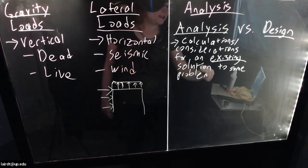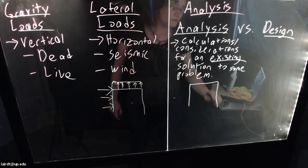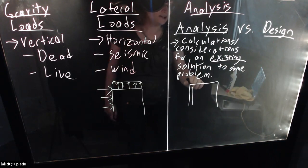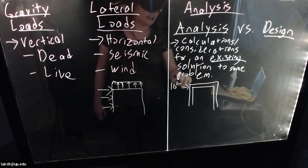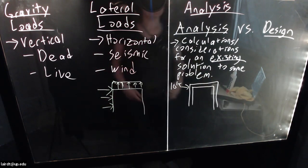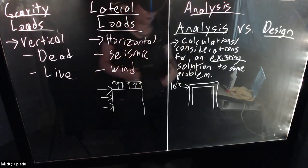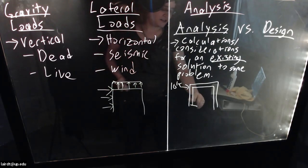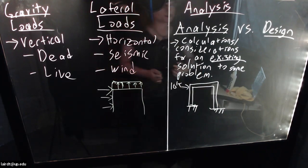In the context of this course, you would have a model structure — you already have the beams, the columns, the layout, etc. — and maybe I tell you: here's this structure, it has a load of 10 kips applied. Analyze the deflections, the rotations at the member ends, the forces, the stresses. So if I'm asking you to analyze a problem, I give you the details of the structure and then ask you to run through calculations related to that.